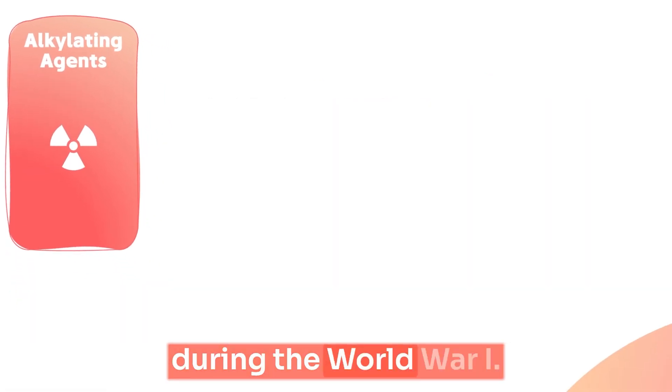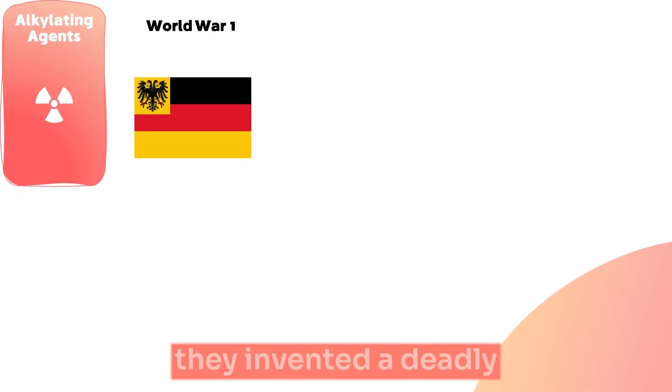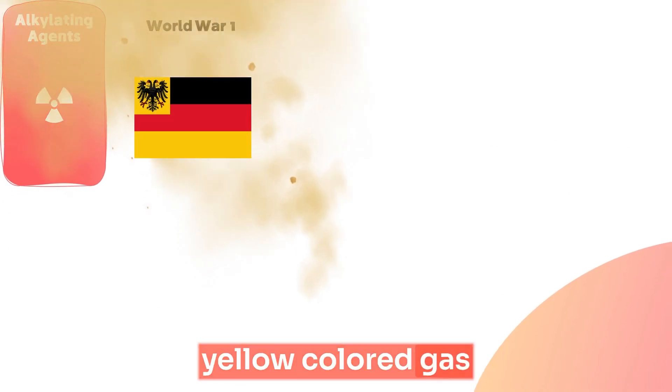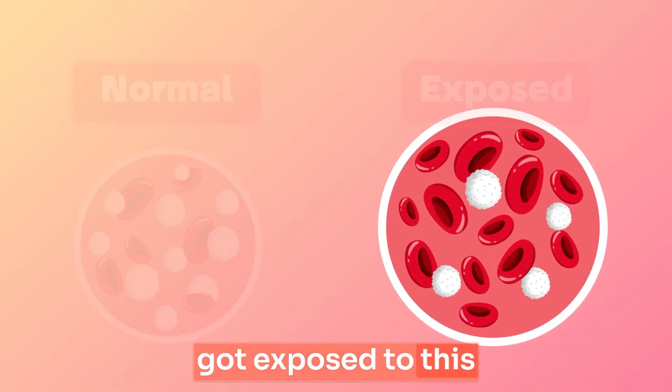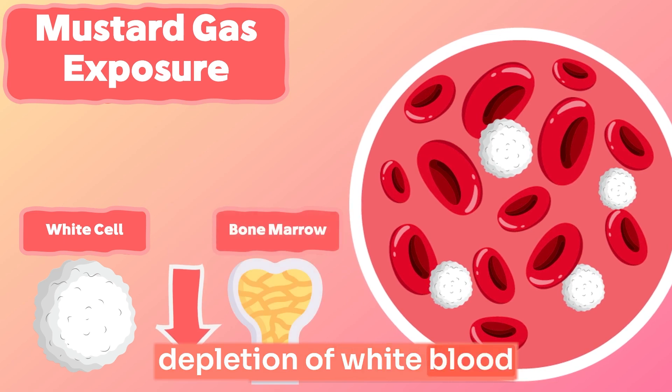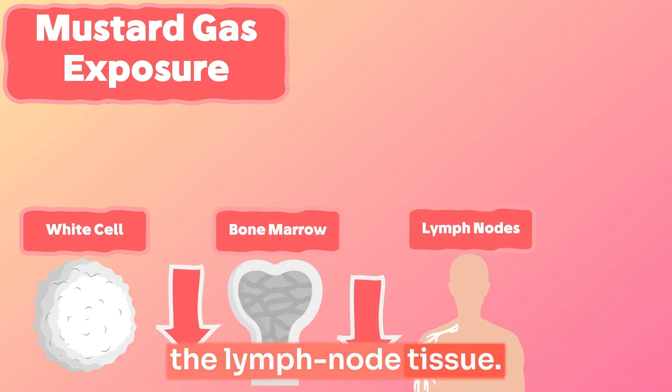Their first use was during World War I by the German army. They invented a deadly yellow-colored gas that has a unique mustard smell, later called mustard gas. The soldiers who got exposed to this gas suffered from a depletion of white blood cells and punctures in the bone marrow and the lymph node tissue.